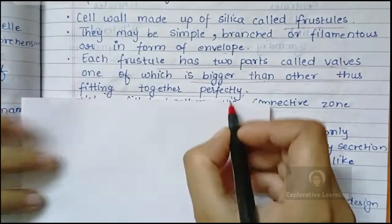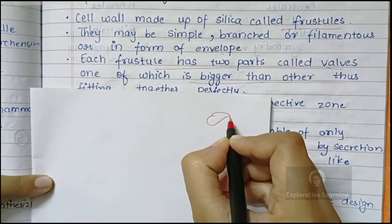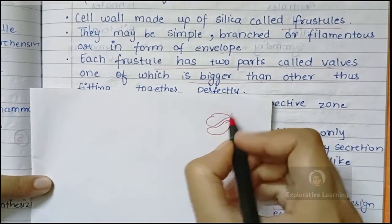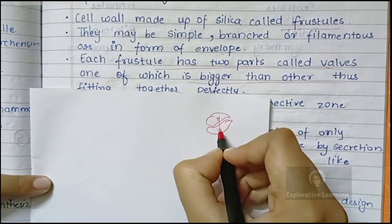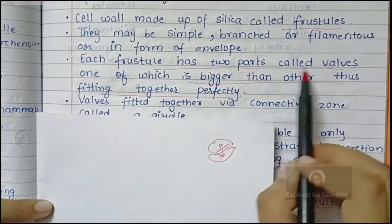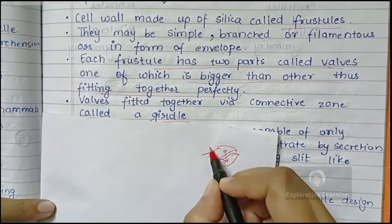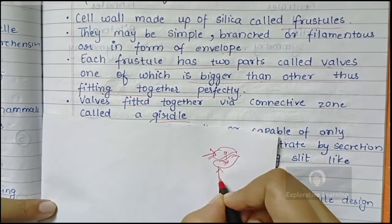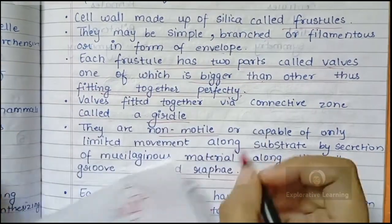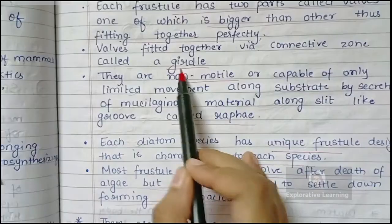The two walls of the frustule fit inside each other just like a soap box — the lid of the box fits inside the lower portion. The bigger wall covers the smaller one, and this is how both parts of the frustule fit together beautifully. Walls fitted together via a connected zone are called a girdle.